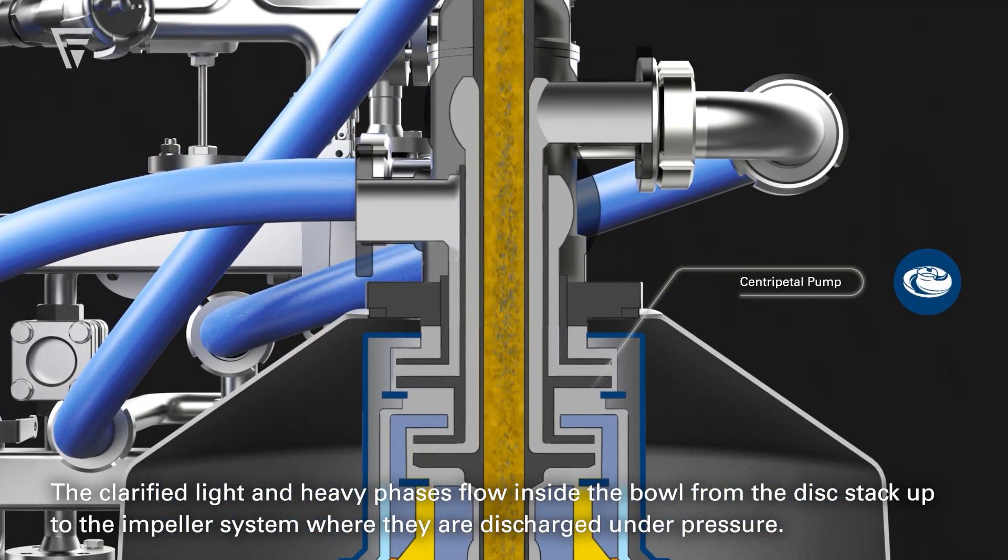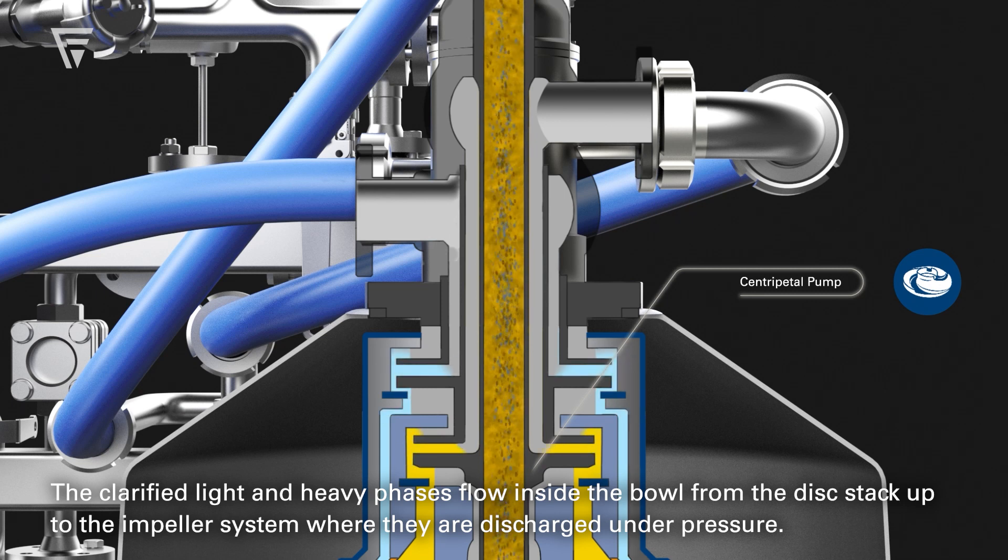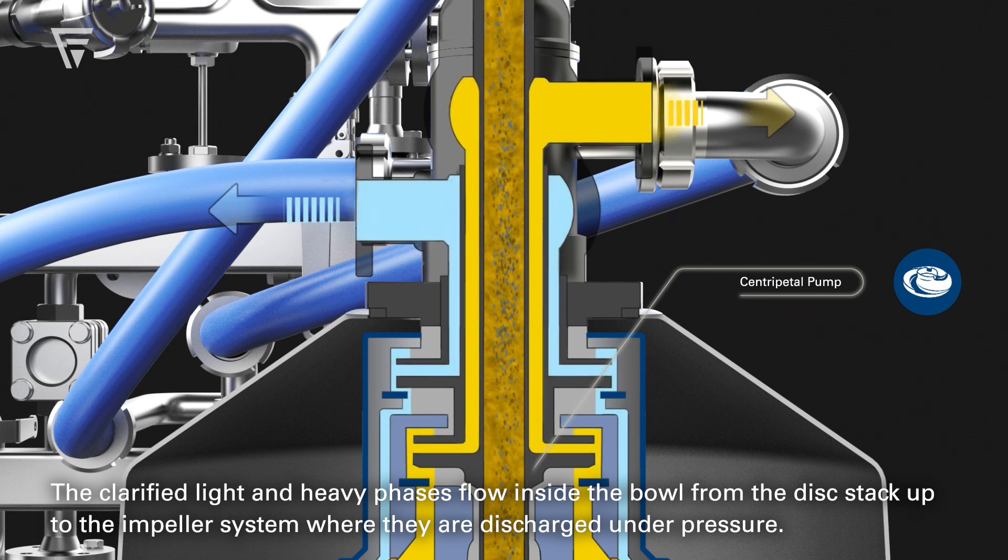The clarified light and heavy phases flow inside the bowl from the disk stack up to the impeller system, where they are discharged under pressure.